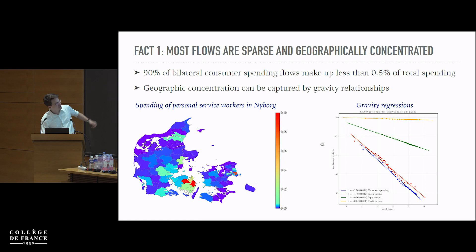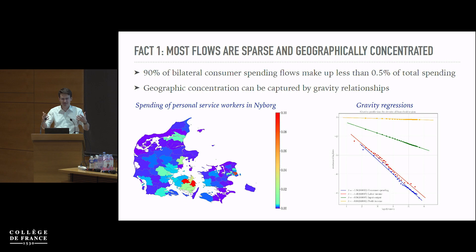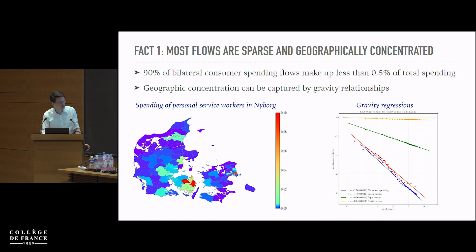Running a gravity regression and looking at residuals after two-way fixed effects, there is a significant decline in consumer spending with distance. Labor supply or commuting falls off at roughly the same speed as consumer spending, which is natural. Input-output trade falls off less with distance — it's easier to ship goods than move people. Profit flows are essentially flat, since it's much easier to move money than goods.